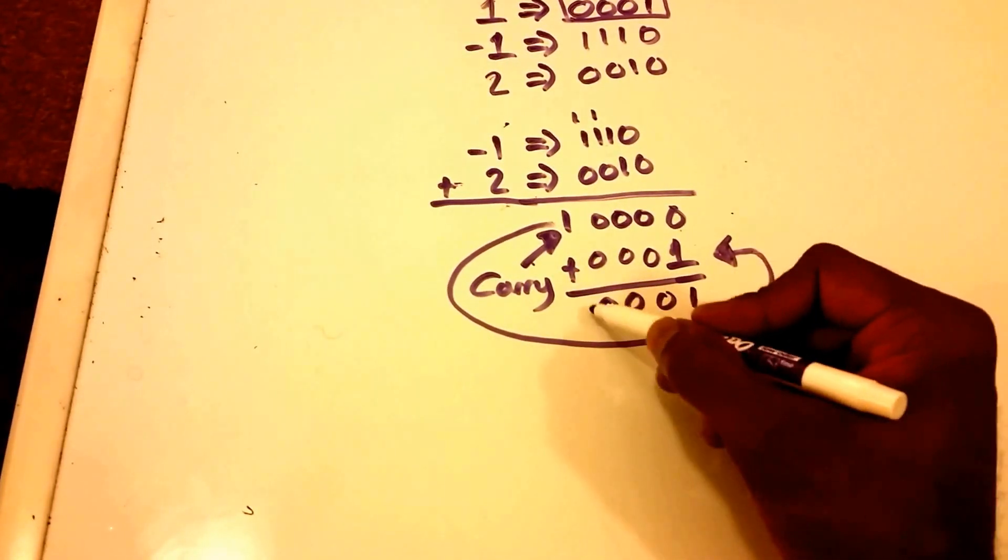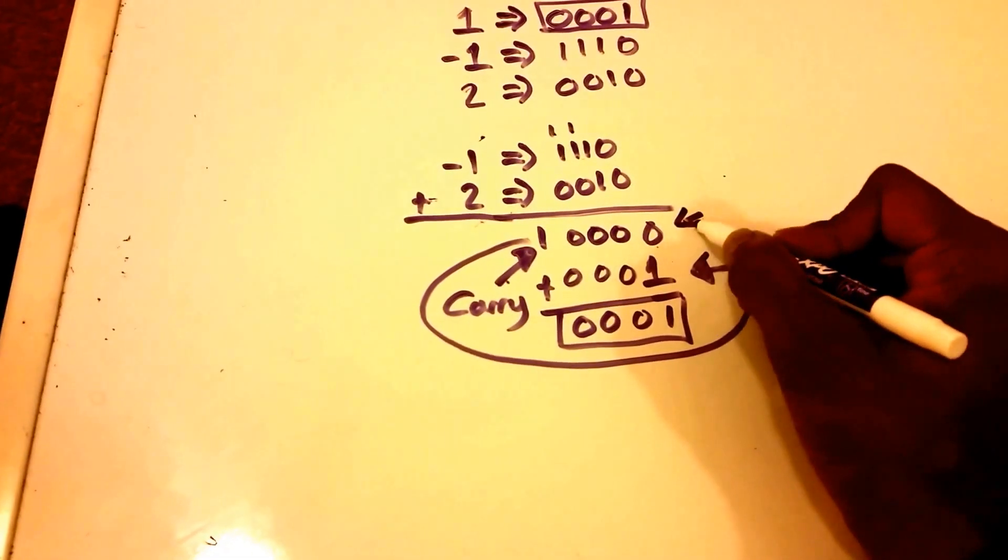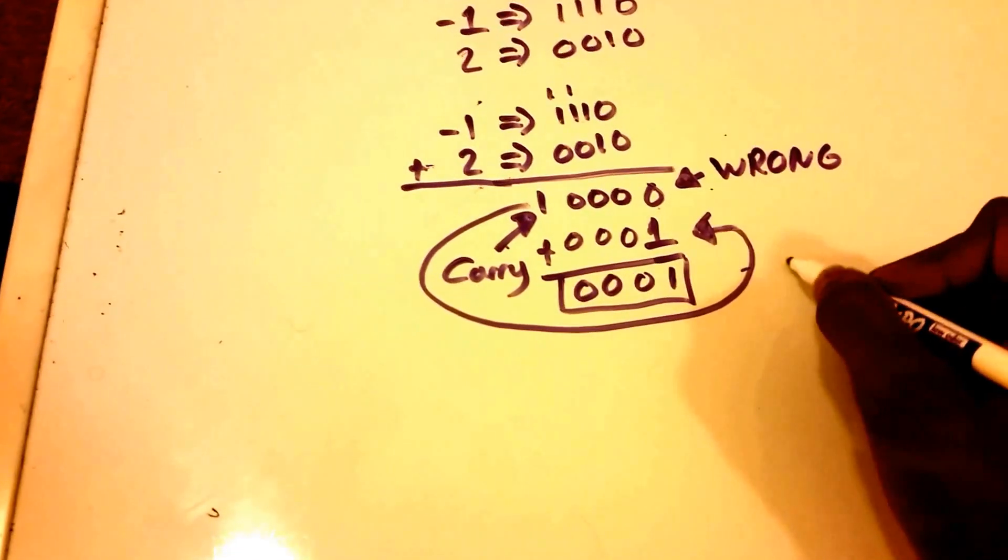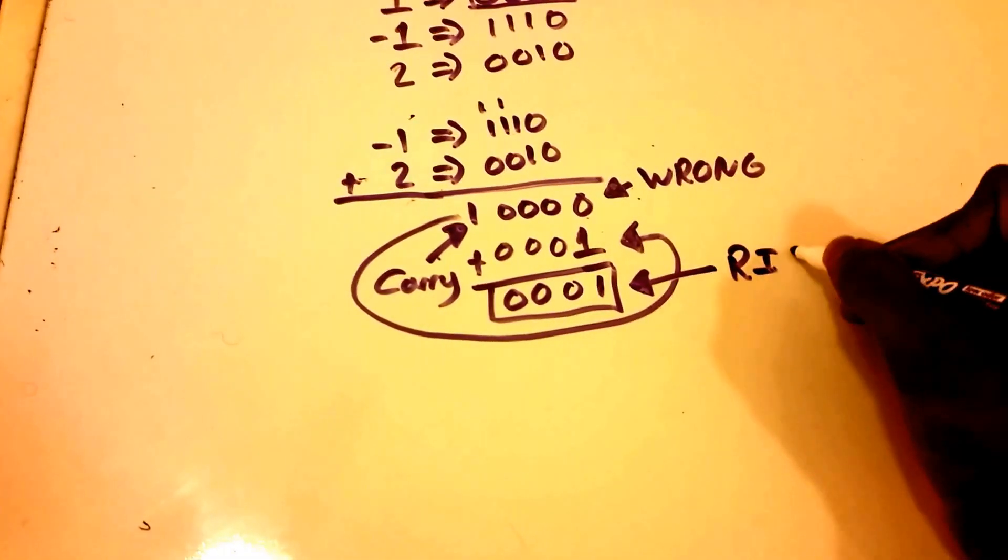So now we get the correct result. So here this was wrong and then of course here this is right or correct.